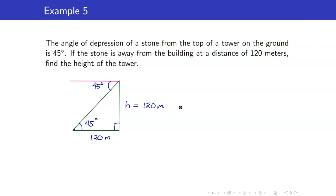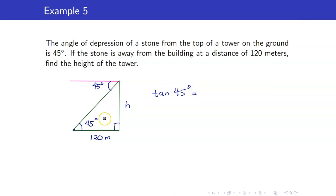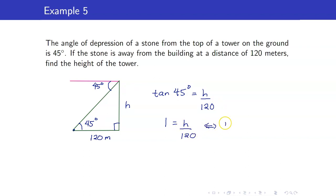However, I will solve it using trigonometric functions. The relationship between the angle, the unknown H, and the given 120 meters: H is opposite the 45° angle and 120 meters is the adjacent. So tangent 45 equals H over 120. Since tangent of 45 is 1, we get H equals 120 meters.